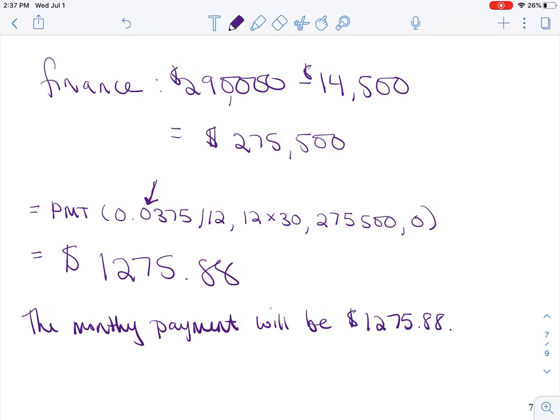But if this was real life, because you only put five percent down, you would have to pay mortgage insurance, which is roughly like a hundred dollars a month. So really your monthly payment would be about $1,375.88. If you put twenty percent down, you don't have to worry about that mortgage insurance. Okay, I'll see you next time.